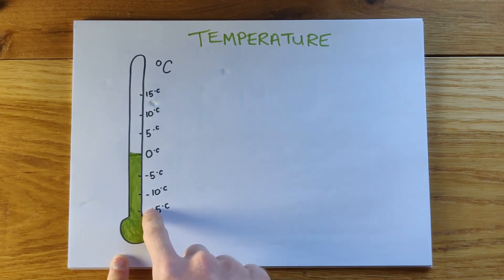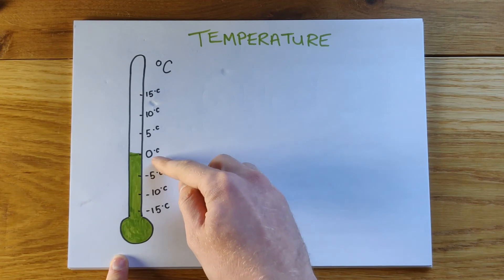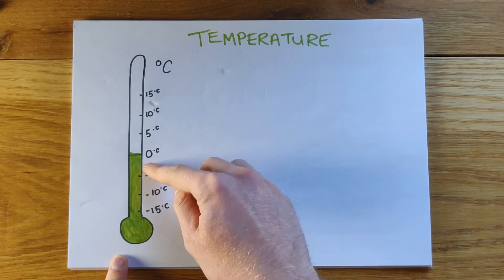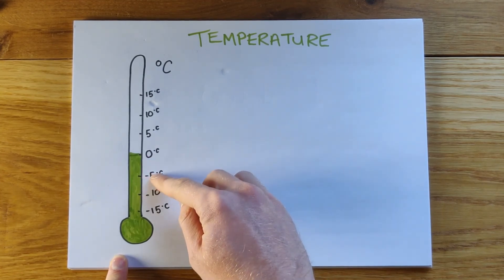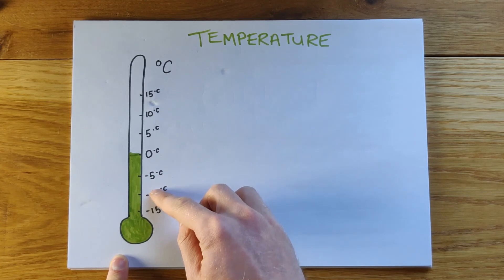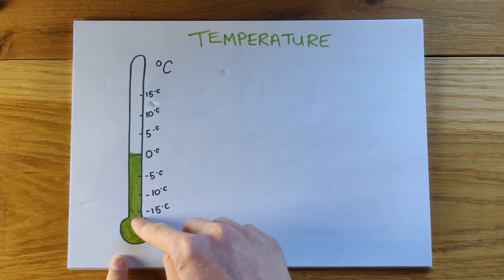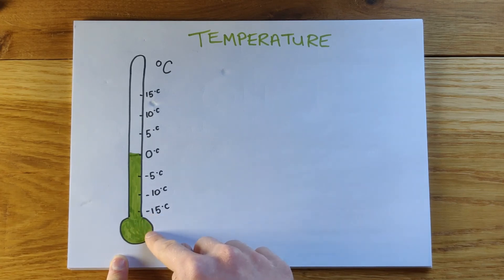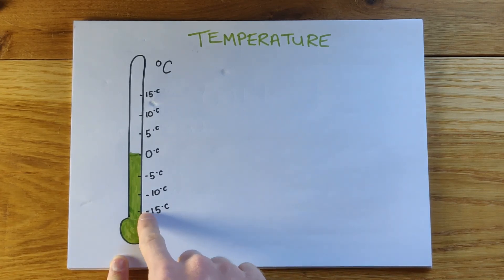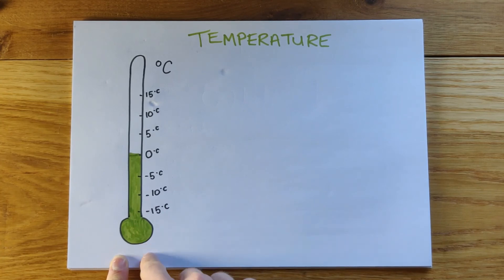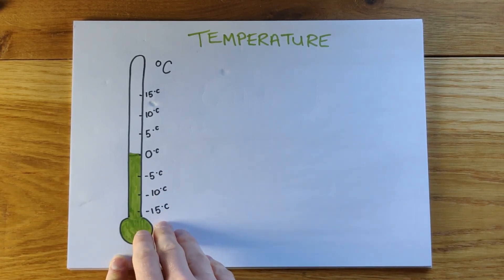For instance, if you stepped outside and it was snowing, it might be just below zero degrees, perhaps minus five. But if you went somewhere really, really cold, like the Antarctic, it could be minus 15 or even well below that, a temperature that will go off this thermometer and you wouldn't be able to show it. It could be minus 40, minus 50 degrees Celsius.